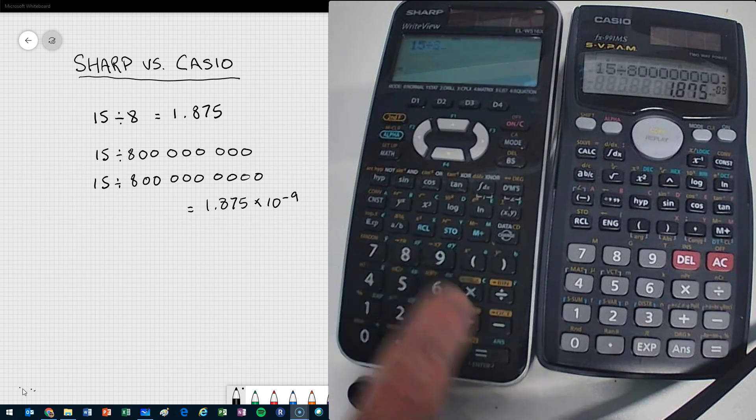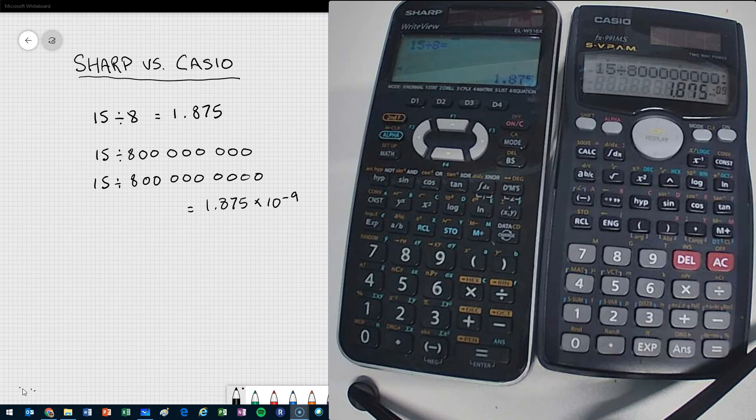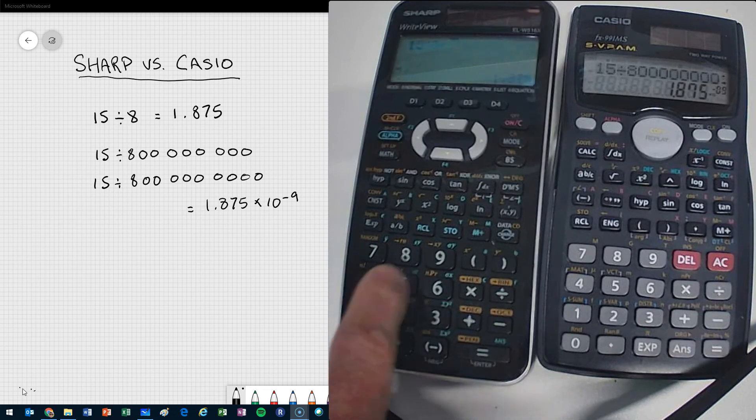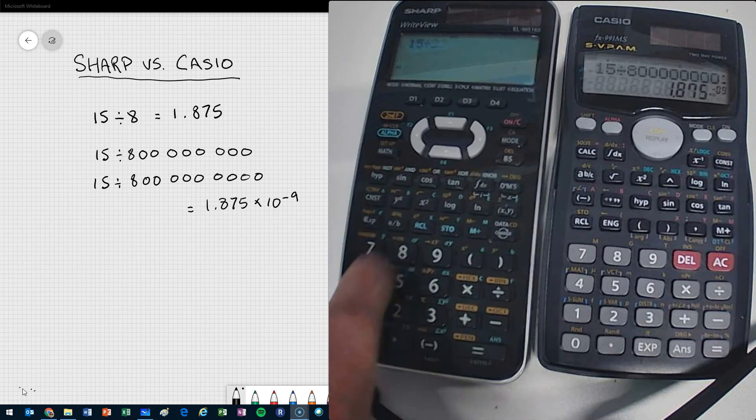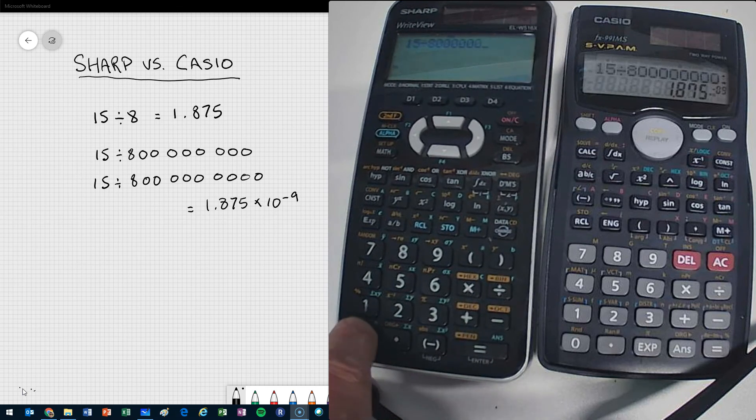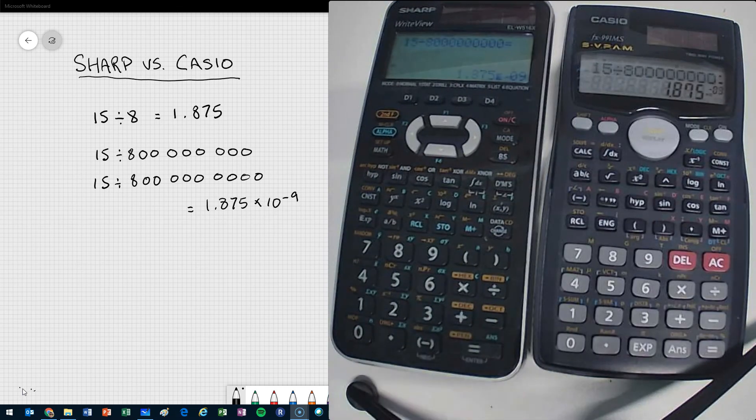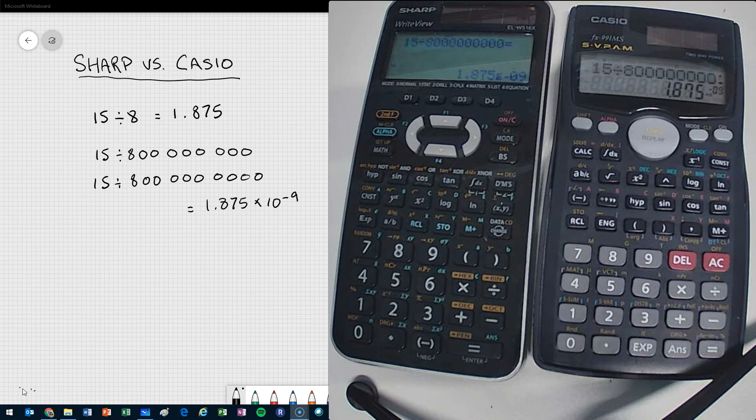So 15 divided by 8 gives me a 1.875. 15 divided by my large number gives me my value in exponential form or scientific notation.